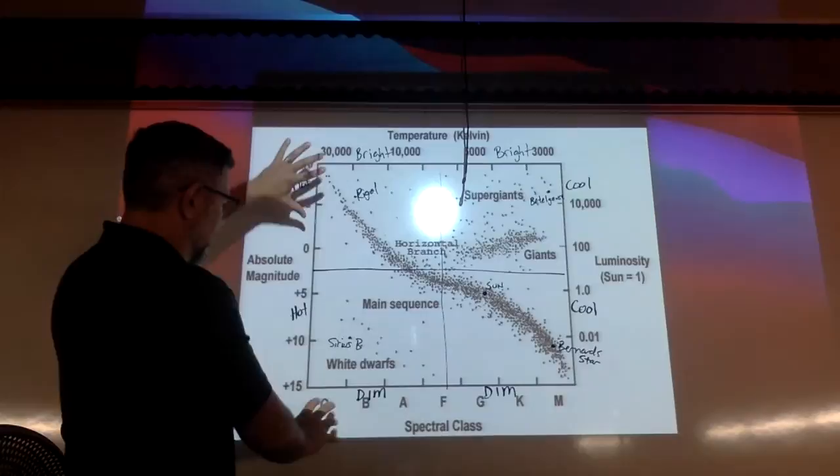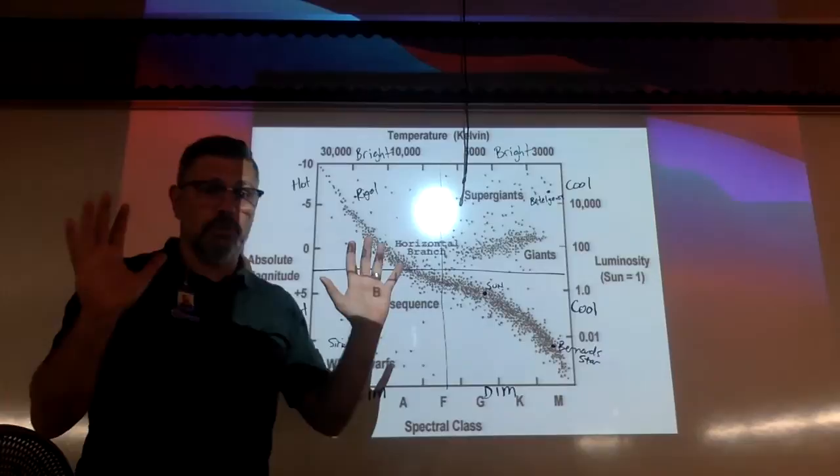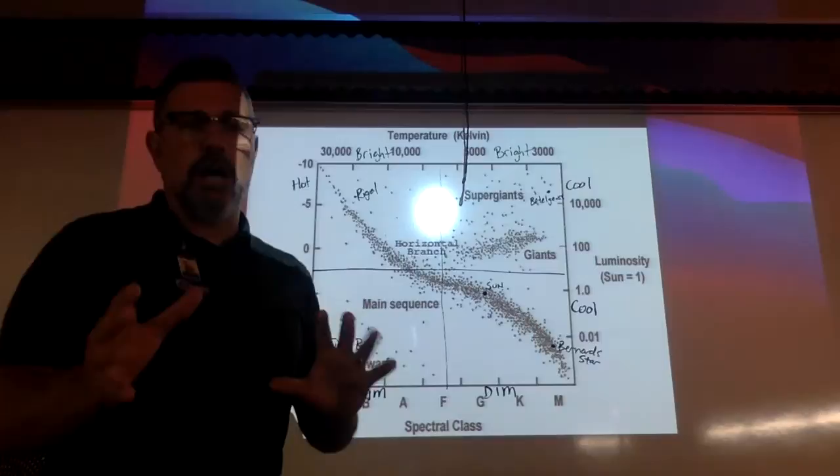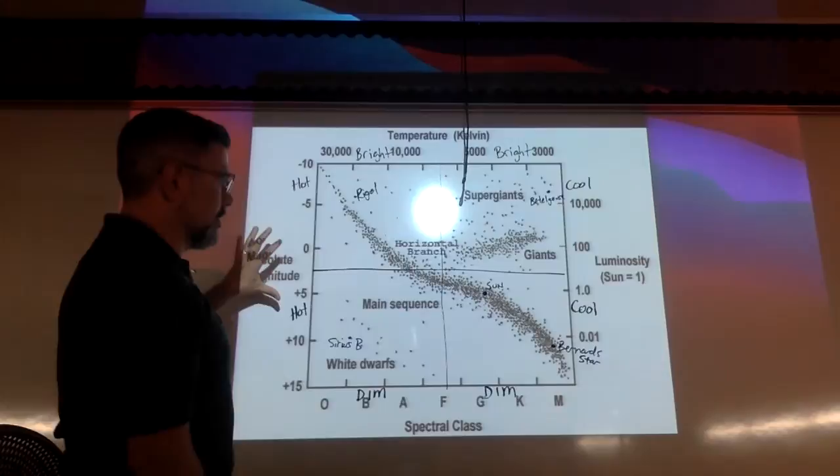On the y-axis is brightness. Brightness is also called absolute magnitude. So don't let that bother you. And it's also known as luminosity. Brightness and luminosity, also known as absolute magnitude.